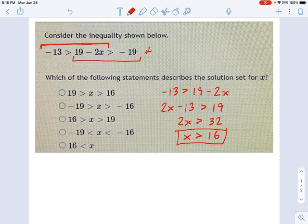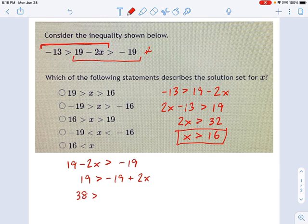And then we'll come around here and do the right side of the equation next. I'm going to say 19 minus 2x is greater than negative 19. And I'll just add 2x to each side. 19 is greater than negative 19 plus 2x. And then we'll add 19 to each side. So we get 38 is greater than 2x, which gives us 19 is greater than x. Okay? So I have 19 is greater than x, and x is greater than 16.